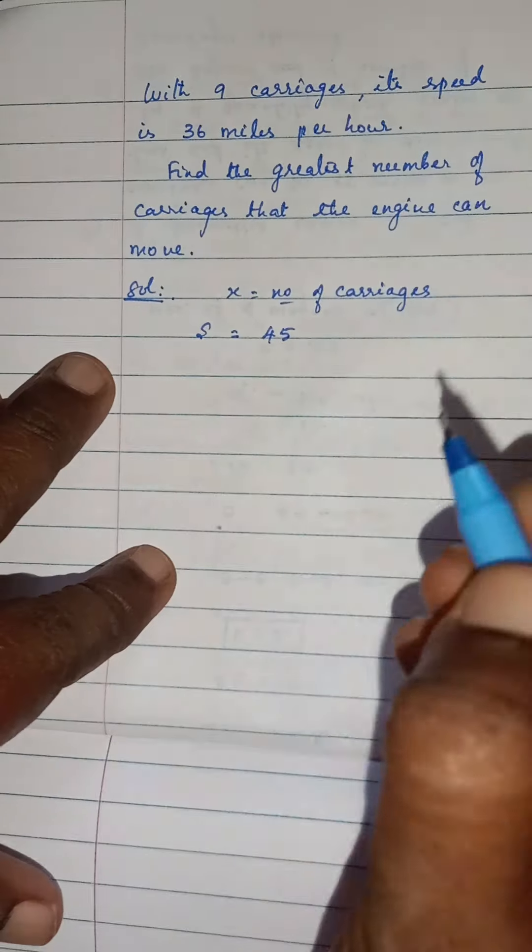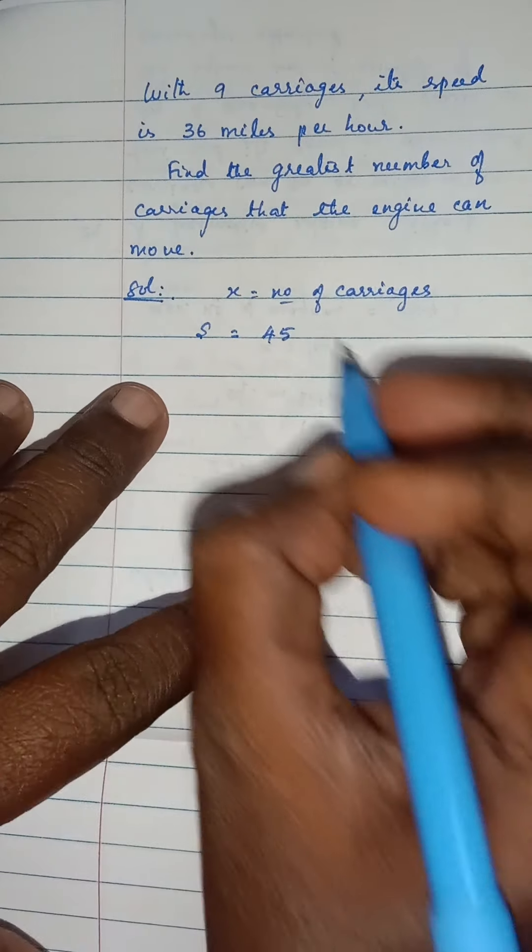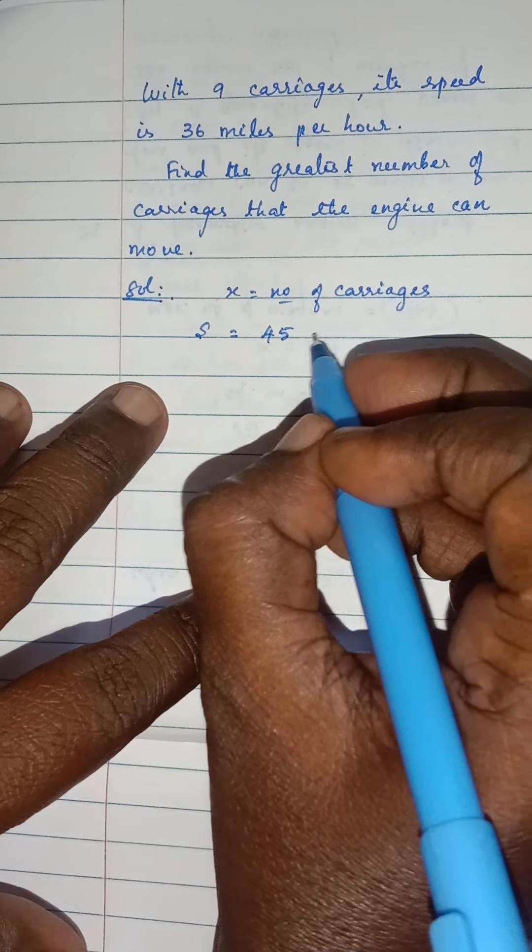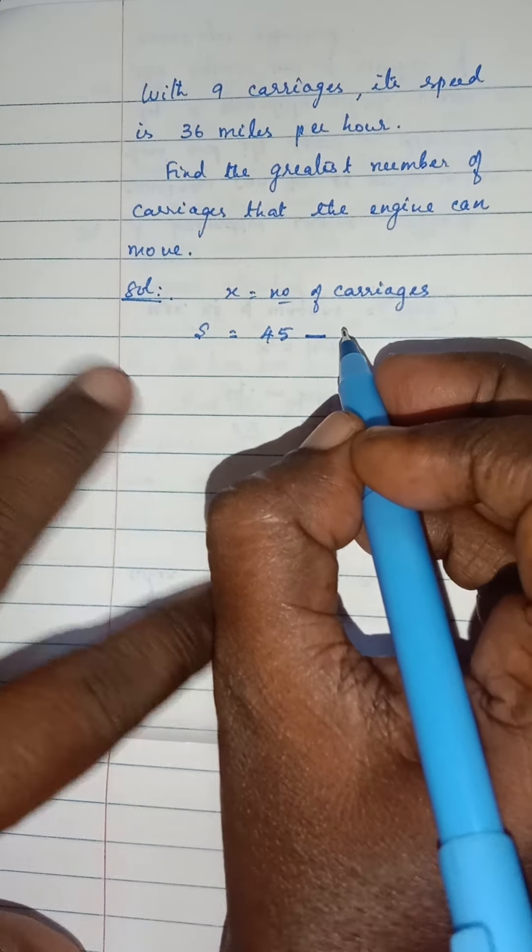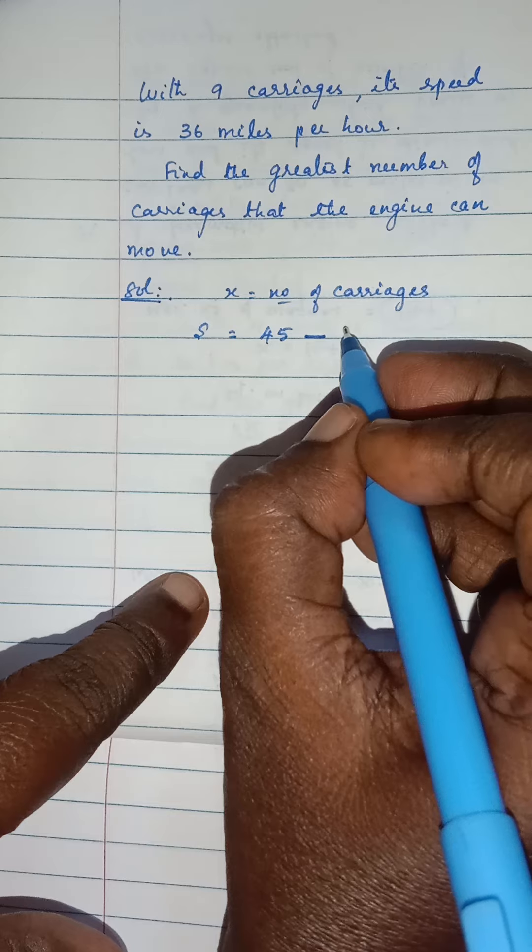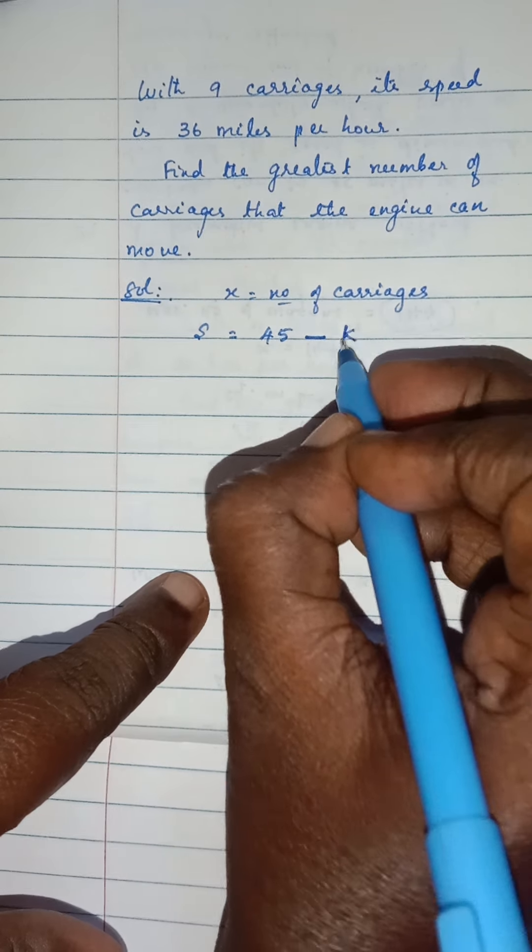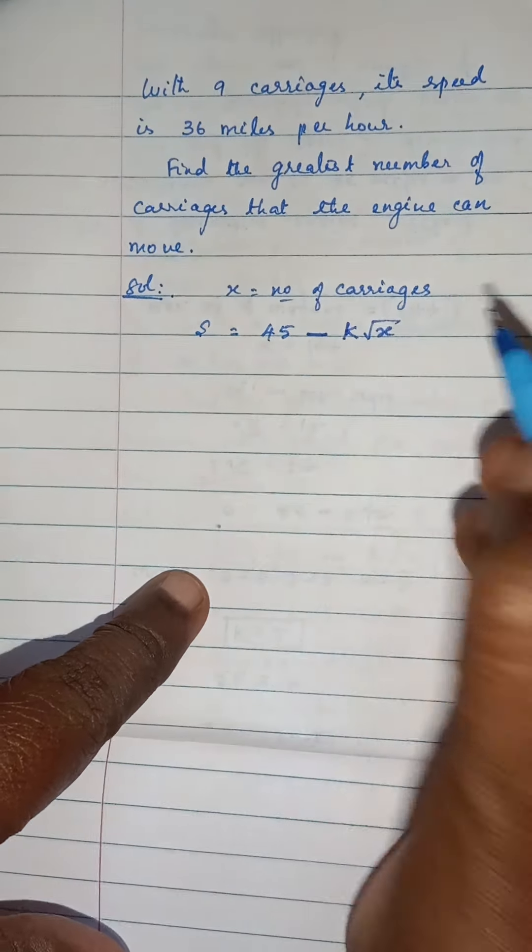The first thing, a locomotive engine can be 45 miles per hour. The speed is diminished, so 45 minus S. The diminishing quantity can vary as k times square root of number of carriages attached.